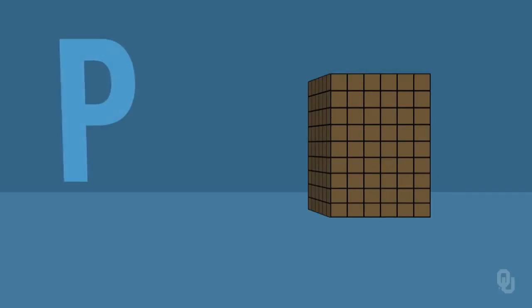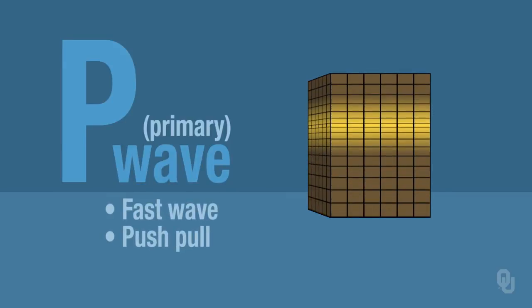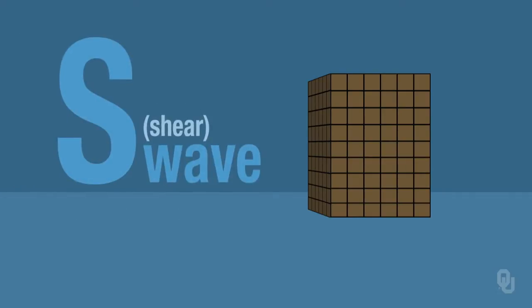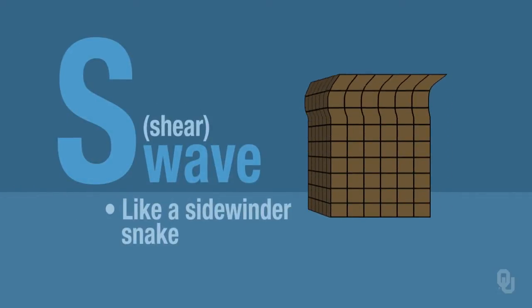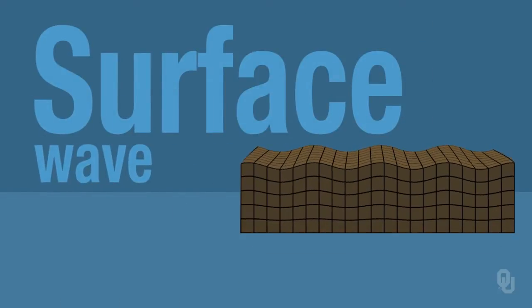What kind of energy is released? There are seismic waves that are released, and there are three basic types of waves. There's the P, or primary wave — this is the fast wave, and it's a push-pull kind of wave. The second type is the S, or shear wave, which moves like a sidewinder snake across sand. The third type is the surface wave, which is generally the damaging wave.